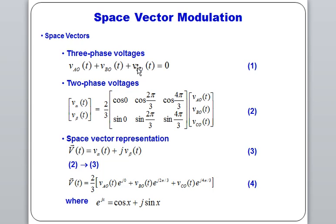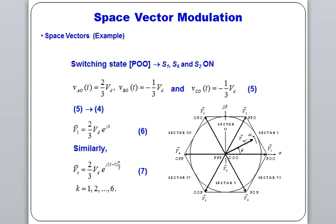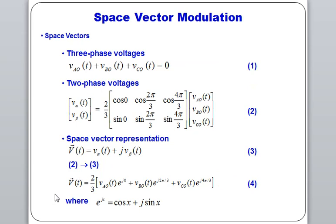We define space vector modulation in terms of two-phase voltages by removing the alpha-beta domain using the Clarke transformation matrix. Removing vt gives: v_alpha + j*v_beta. For the transformation into three-phase, we put vao, vb0, vc0 into the transformation matrix. The space vector modulated voltage vt in the time domain is given by the equation: vt = (2/3)[vao·e^(j0) + vb0·(e^(j2π/3)) + vc0·(e^(j4π/3))]. For the switching state POO — meaning S1, S6, S2 are on — vao, vb0, vc0 take specific values.